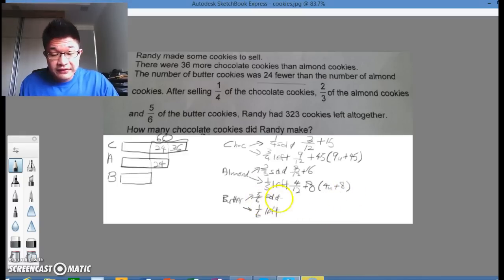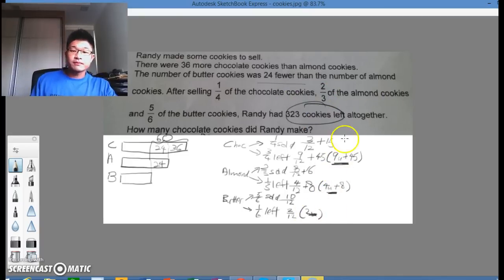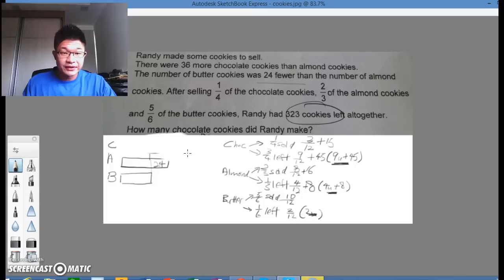Same thing for here, five-sixths becomes ten-twelfths. And then what's left is two-twelfths, which is basically two units. Now this, this, and this would therefore add up to be three hundred and twenty-three. Shucks, not enough space. Let me clean this off and then we will have space.